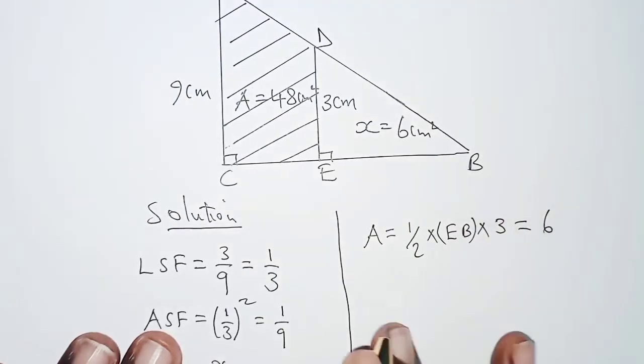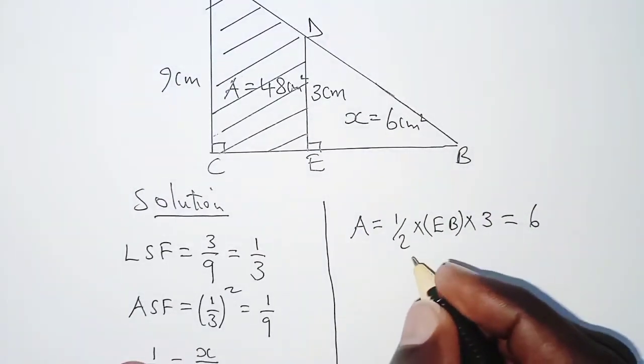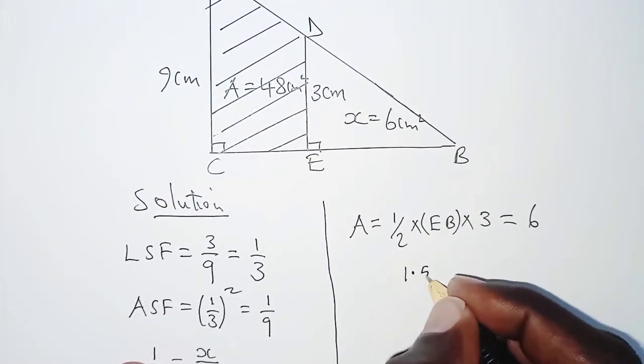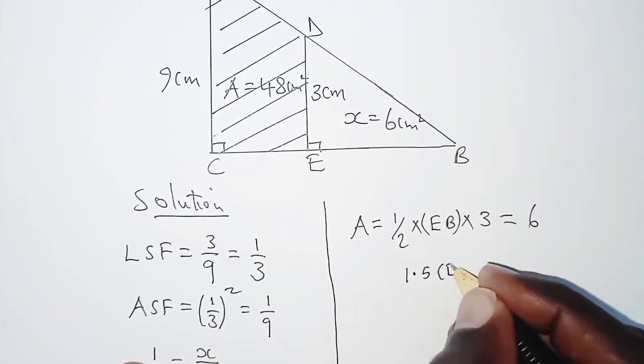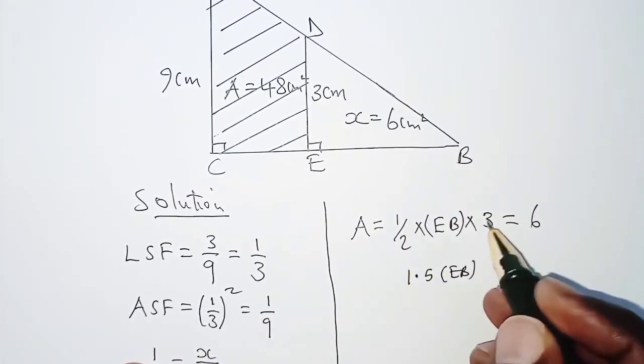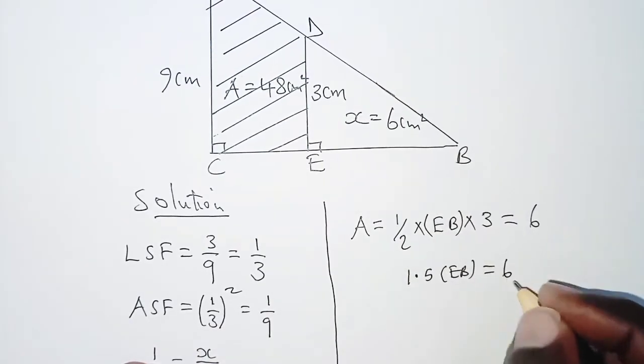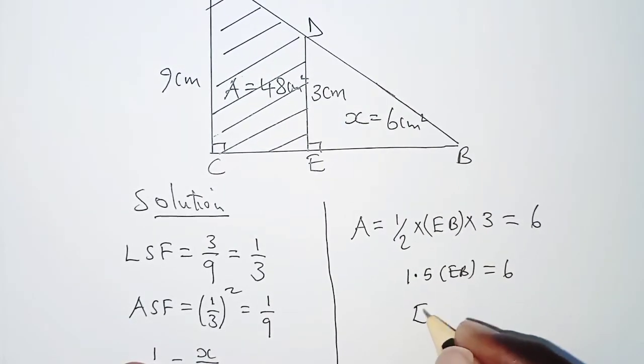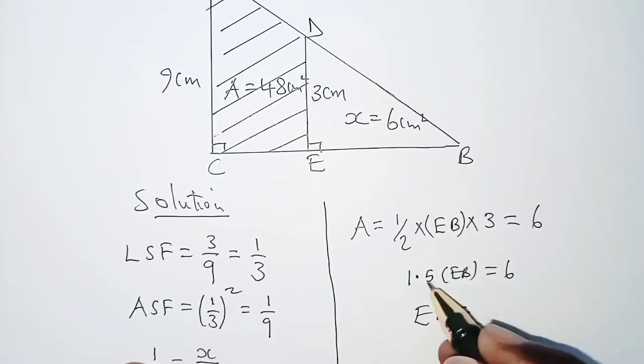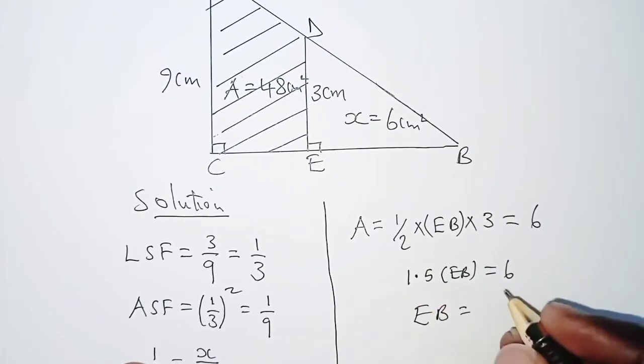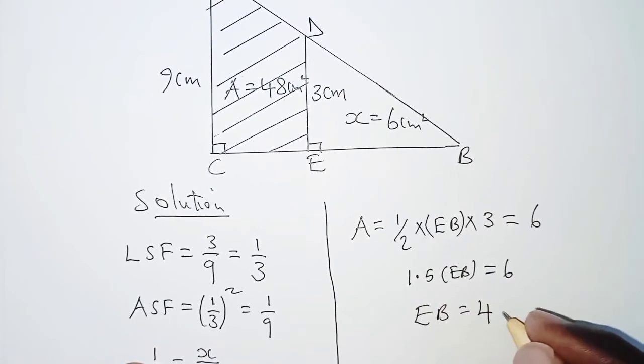So this should give us 1.5 EB, that is a half times 3, which is 1.5, and then we equate it to 6. So that means EB will become... you divide both sides by 1.5, and that gives us 4 centimeters.